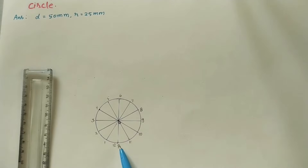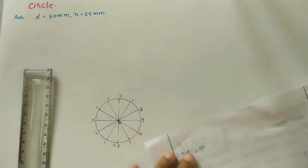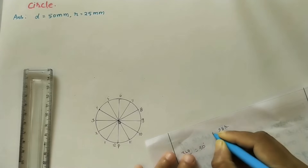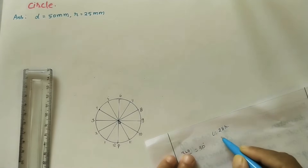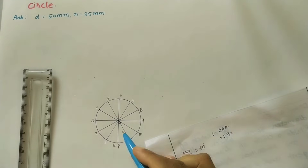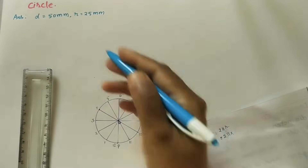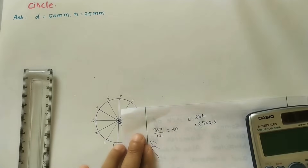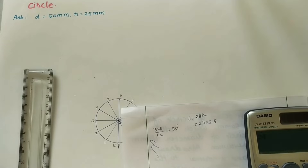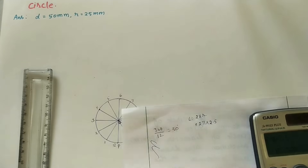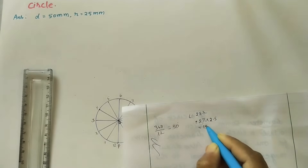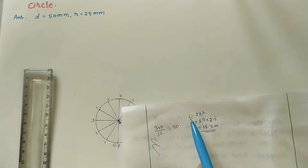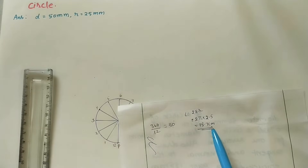After marking P point, at P draw the peripheral length of this circle. The formula is 2πR — the length of the entire periphery. So here 2 × π × 25 mm, which is 2.5 centimeters. Doing the calculation: 2 × π × 2.5 gives us 15.7 centimeters. This is the length of the periphery.